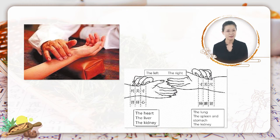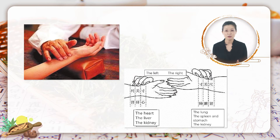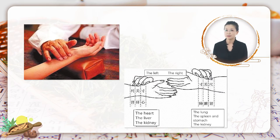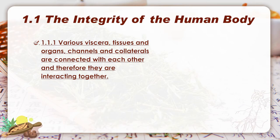While on the right hand, any change in the manifestation of the pulse at different positions can indicate the lung, the spleen and stomach, and the kidney. Therefore, when a TCM doctor takes pulse on a patient, more than counting the beats, he is detecting what is going on inside. TCM believes that various viscera, tissues, organs, channels and collaterals are connected with each other, and therefore they are interacting together.